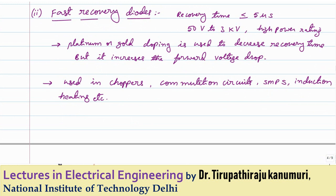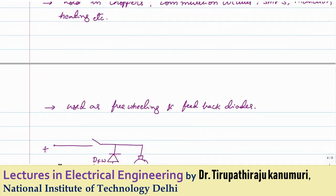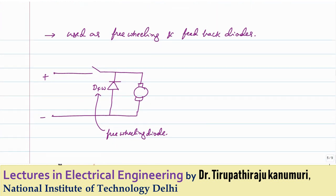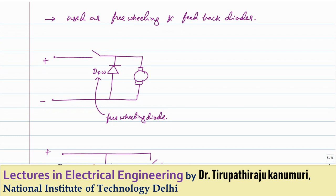Fast recovery diodes are used as freewheeling and feedback diodes. For example, with a DC machine, when the switch is suddenly opened, the inductance of the machine prevents an instantaneous current change to zero. The term L·di/dt would create a huge voltage that could damage the equipment. Connecting a freewheeling diode provides a bypass path so the current does not drop to zero suddenly — this is the freewheeling diode application.